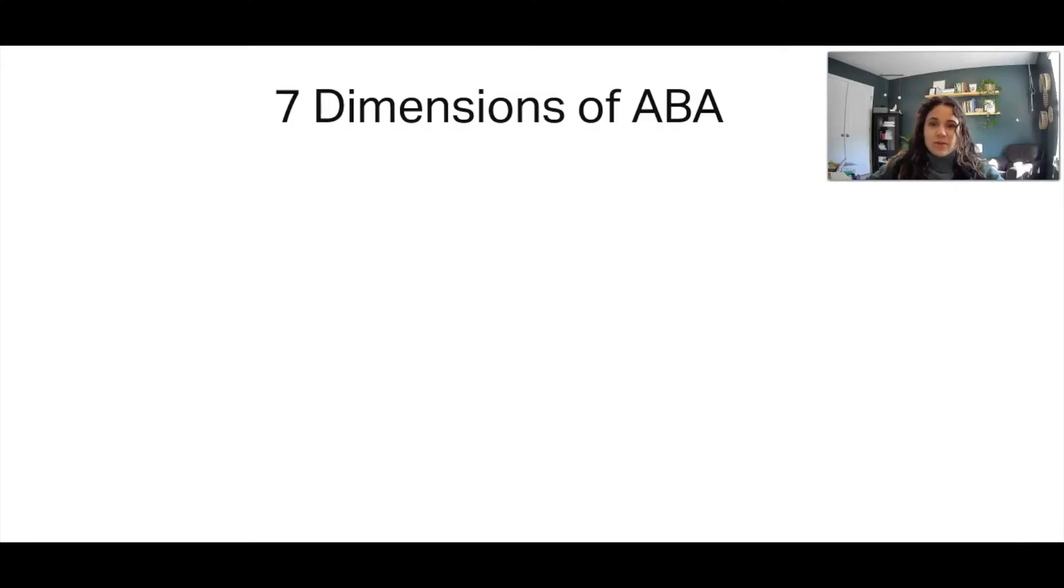Hey everyone, it's Katherine here with Ready Set ABA. Today I'm going to be going over the seven dimensions of ABA. These dimensions guide us in our decision-making when selecting target behaviors, defining behaviors, or making decisions based on data. An acronym to remember these is BATCAGE. Sometimes people also say GET A CAB, and this is a great way to remember these terms. We'll talk about each one and go through a few examples as well.